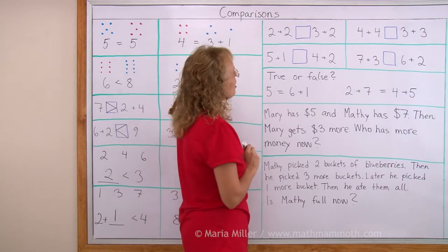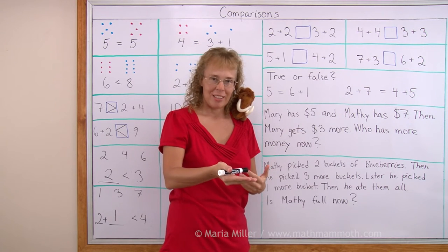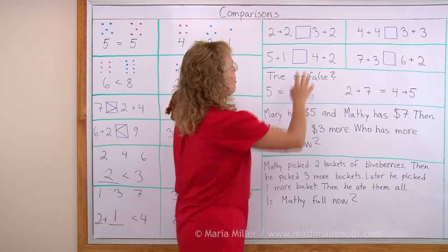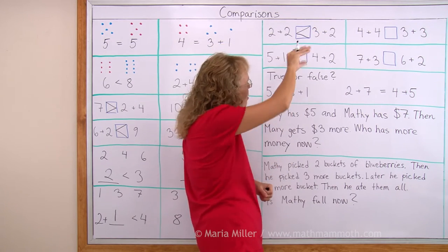More alligator mouth problems here. 2 plus 2 here. And 3 plus 2 on the other side. Which one is more? Well, 3 plus 2 will be more. That's where the mammoth mouth has to open.